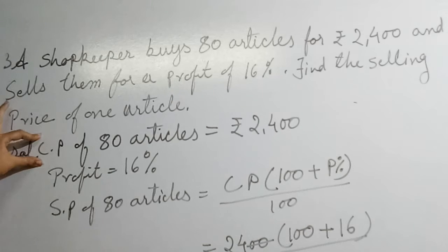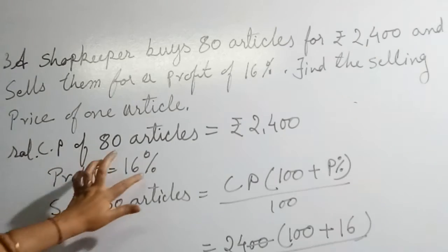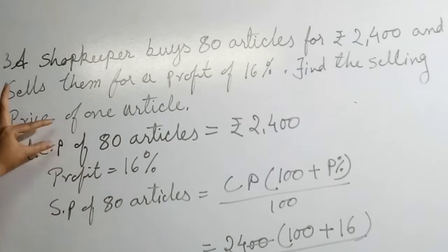So first we write: CP of 80 articles equals rupees 2400, then we write profit equals 16 percent.